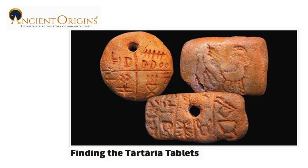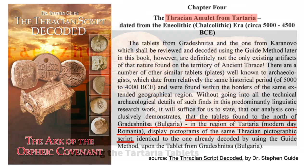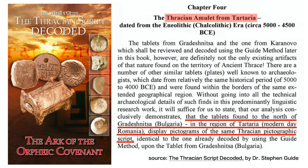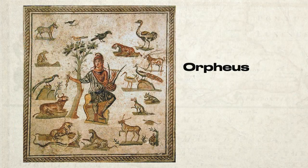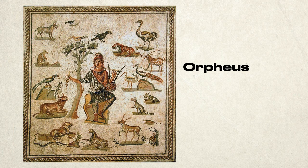However, a set of stones referred to as the Tartarian tablets were found further west in central Romania. Dr. Stephen Guide, in his book, The Thracian Script Decoded, discusses the Thracian amulet of Tartaria, linking the ancient place names of Thrace and Tartary. It was from Thrace that the musical demigod Orpheus emerged as the father of songs.